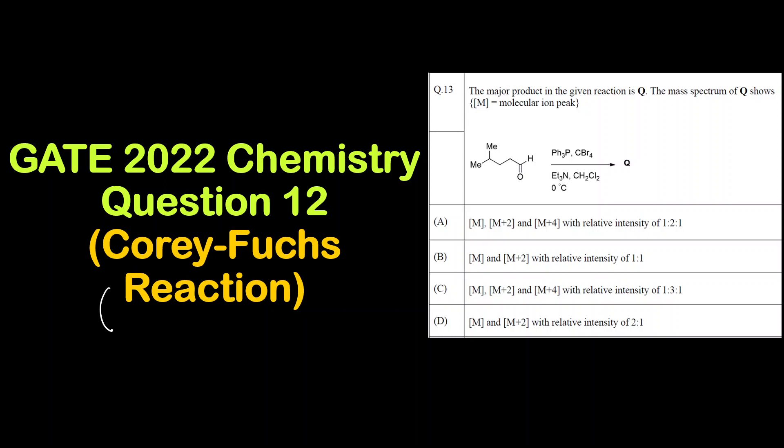Now this is a reaction that is similar to the Wittig reaction. Okay, what we do in the Wittig reaction? The aldehydes or ketones, aldehydes or ketones, they are converted to what? They are converted to alkenes.